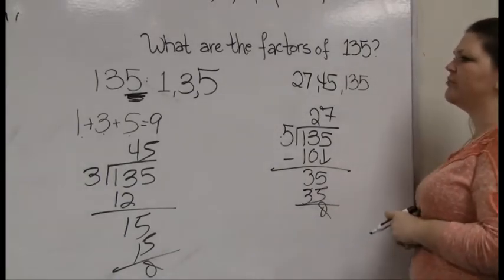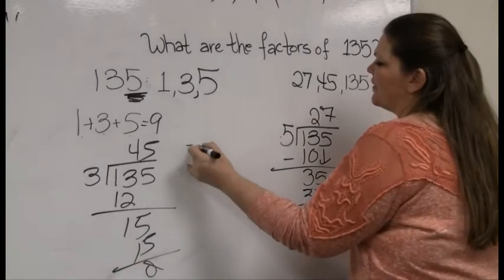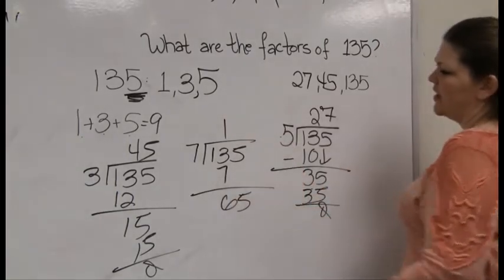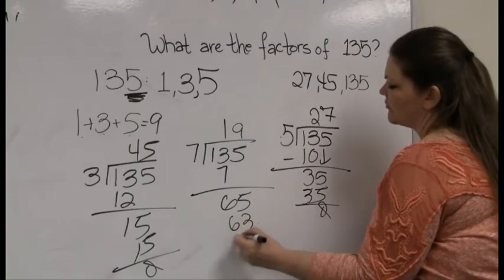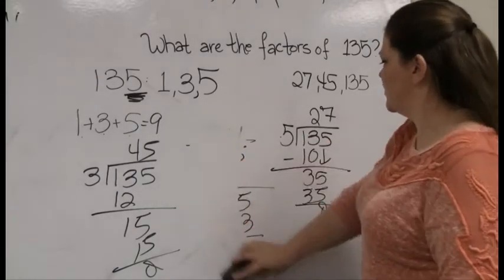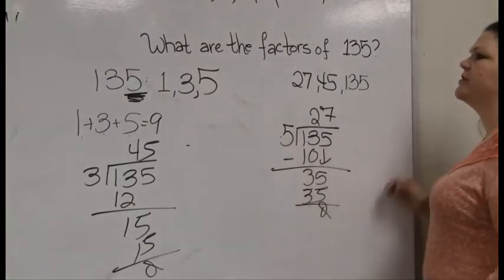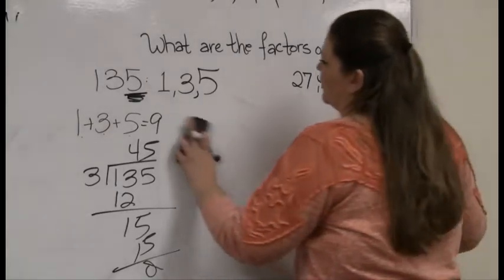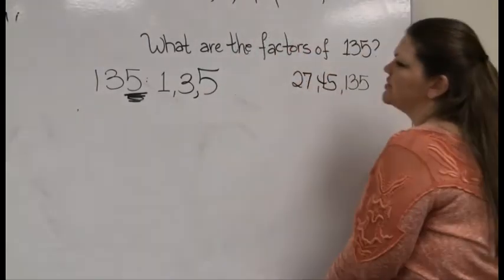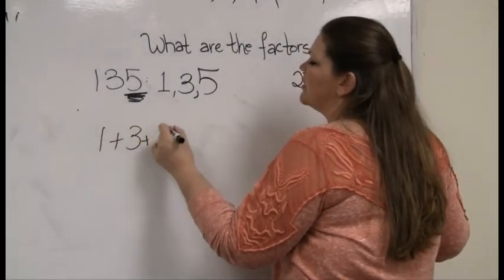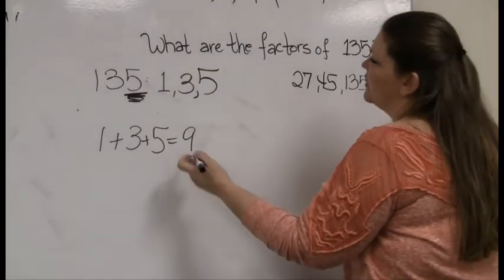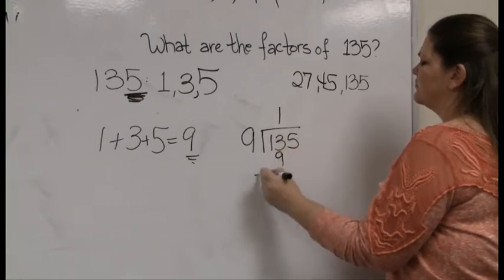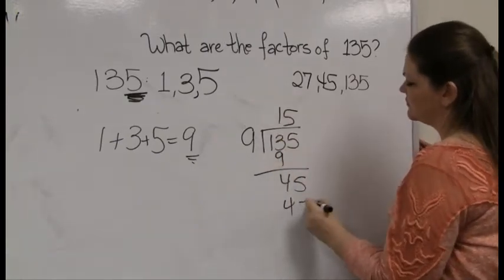Next odd number is 7. Does 7 go into 135? 7 times 19 is 133, but there's a remainder — throw it out. Next number to check is 9. You guys remember the trick for 9? It's a sum-of-digits trick. 1 plus 3 plus 5 we already did — it's 9. If it adds to 9, there's a 9 in it. Let's divide 9 out.